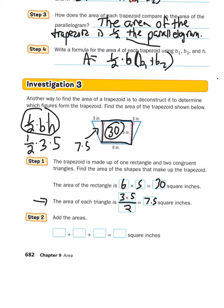Since one triangle has an area of 7.5, the other one is also 7.5 because they are congruent. In step two, add the areas: 30 for the rectangle, plus 7.5 for one triangle, plus 7.5 for the other triangle, which adds up to 45 square inches. If you ever forget the formula for area of a trapezoid, you can always break it apart, find the area of the two triangles and the rectangle, and add them together.